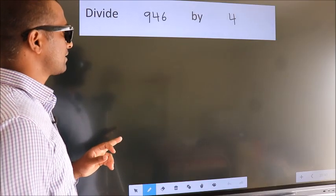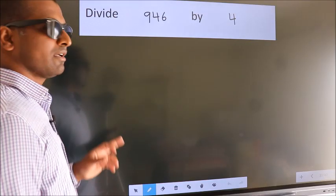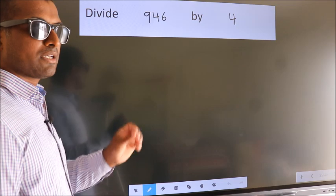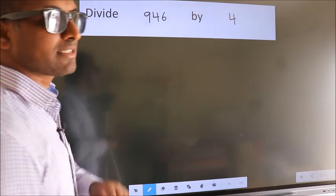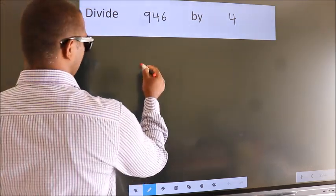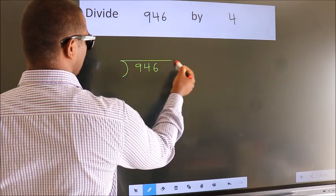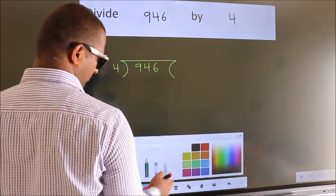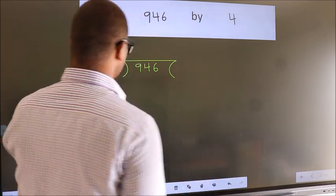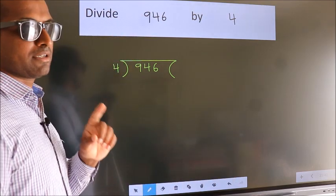Divide 946 by 4. To do this division we should frame it in this way. 946 here, 4 here. This is your step 1.